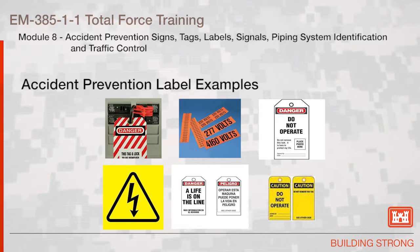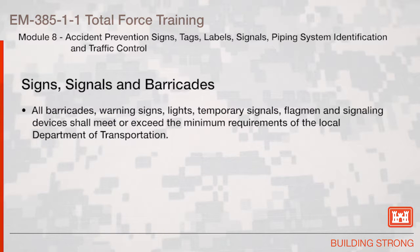Here are examples of accident prevention labels. We see a red danger tag in the corner, yellow caution tags, and orange labels indicating voltage or other information needed for employees. All barricades, warning signs, lights, temporary signals, flagmen, and signaling devices shall meet or exceed the minimum requirements of the local department of transportation.